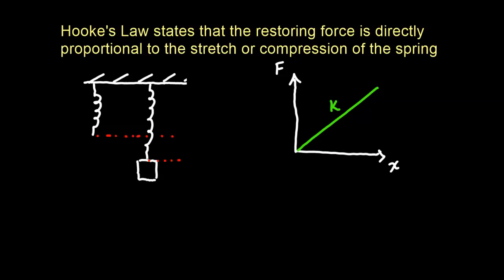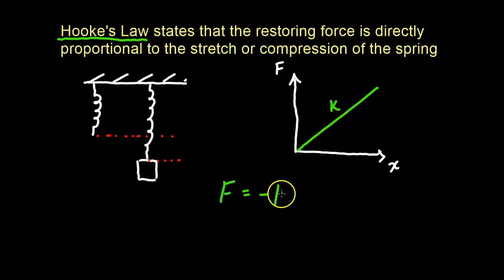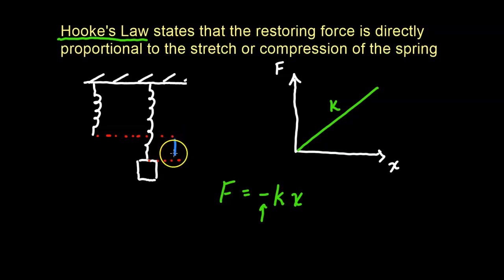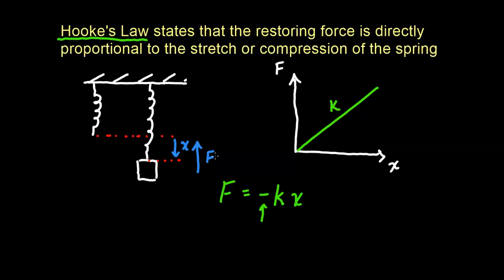Using the force-versus-displacement graph we can derive a relationship for the restoring force and the displacement on a spring. We call this Hooke's Law. Hooke's Law states that the restoring force is equal to negative k — the spring constant — times the displacement. The reason we have the negative is because the restoring force and the displacement are in opposite directions. The displacement goes downward, while the spring force pulls the box upward.